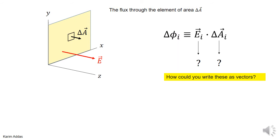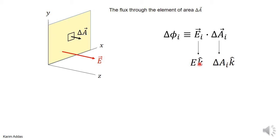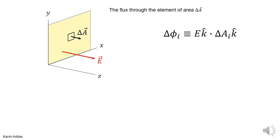Let's calculate the electric flux through the ith element of area. Remember that flux is defined as the electric field vector dotted into the area vector for that element. The electric field points in the k-hat direction and is uniform, so we write it as E k-hat. The area vector has a magnitude times the direction k-hat. Taking the dot product, k-hat · k-hat equals one, so you simply get E times delta-A.